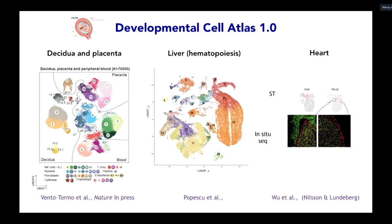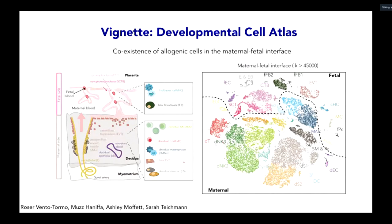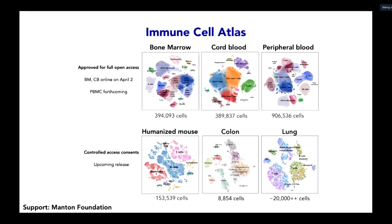A developmental biology effort in the Atlas covers both prenatal and postnatal development in humans, including studies from the decidua and placenta, hematopoiesis in the liver, and heart development. A vignette from Sarah Teichmann's work examines the coexistence of allogeneic cells in the maternal-fetal interface — understudied biology with major implications for human health. The Immune Cell Atlas, the first actual HCA release, covers bone marrow, cord blood, and peripheral blood, and is now in routine use by both computational groups and lab biologists interested in their specific genes and cells. More will be added from tissue-resident cells and the immunized mass.